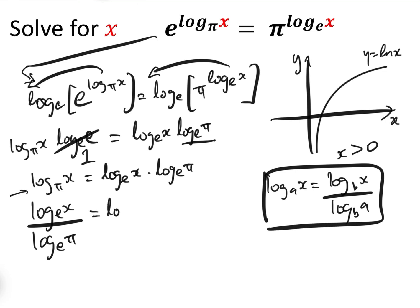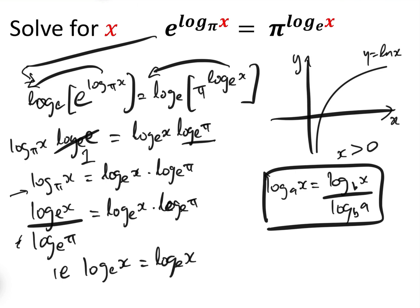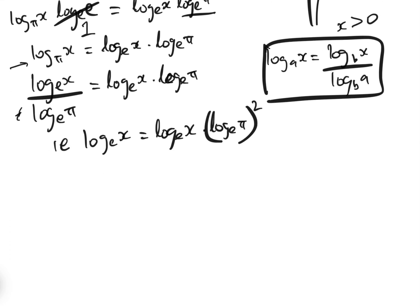Substituting back: log_e(x) over log_e(pi) equals log_e(x) times log_e(pi). Moving this across gives log_e(x) equals log_e(x) times log_e(pi) squared.